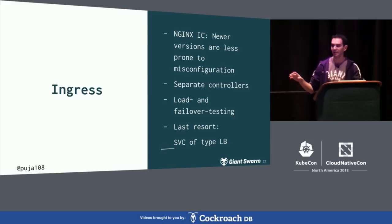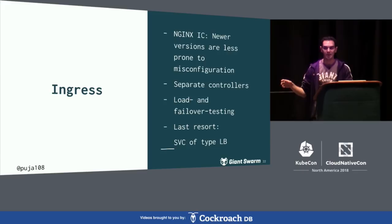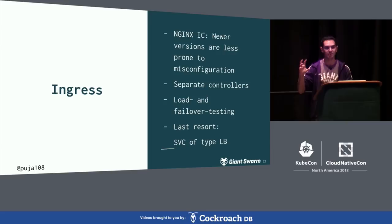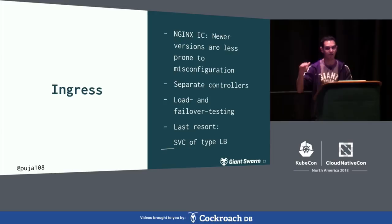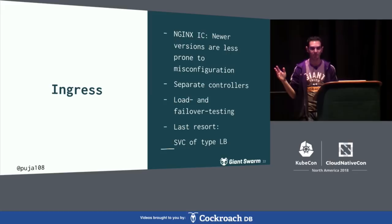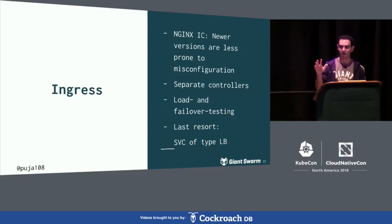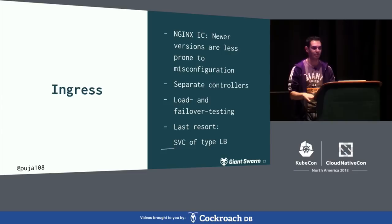Do load and failover testing — not just for ingress, but in general. Try what happens if you take half the ingress controllers down, or a full node down. Also test what happens when you upgrade in production: do you have lost connections? This way you find out if your software is truly graceful and if your settings allow zero downtime. Try failover testing under traffic — that's really important. And as a last resort, especially on the cloud, use services of type LoadBalancer. If you have something like 5 million WebSocket connections at the same time, most ingress controllers won't work — just use a load balancer directly for that service.